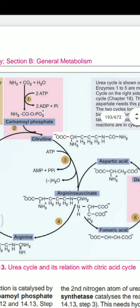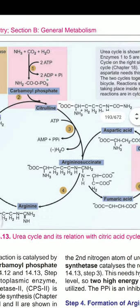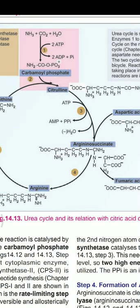Step three requires hydrolysis of ATP to AMP, so two high-energy phosphate bonds are utilized, as seen from the production of AMP + PPi. In step four, argininosuccinate is cleaved by argininosuccinate lyase to form arginine and fumarate. Note that argininosuccinate lyase is inhibited by fumarate.